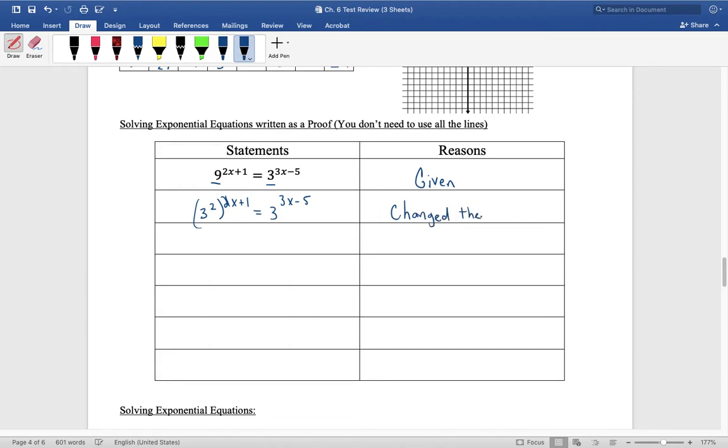If you can't remember the reason, just describe what you did. I changed the base. Now I'm going to distribute this exponent, so I have 3 to the 4x plus 2, and this is 3 to the 3x minus 5. What did I do? I did the power to power rule, meaning if you have an exponent raised to another exponent, you just multiply.